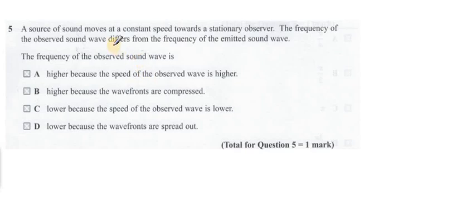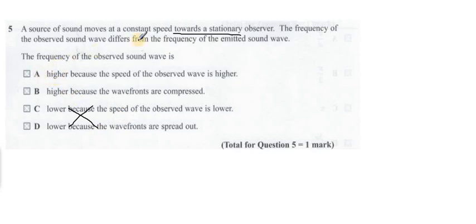Question 5: a source of sound moves at a constant speed towards a stationary observer. The frequency of the observed sound wave differs from the frequency of the emitted sound wave. Since the source is moving towards the observer, the apparent frequency is going to increase, so options C and D are immediately eliminated. Because the source moves, the wavelength of wave fronts comes closer together — the wave fronts are compressed. So the observed frequency is higher. Option is B.